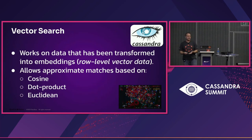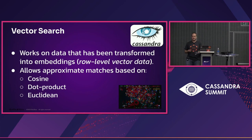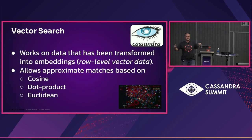Vector search is new with Cassandra as of 5.0. If you haven't used it much, it works on data that's been transformed or tokenized into embeddings. It allows you to do approximate matches or searches on that data inside vector space. You can do that with a few different algorithms — cosine-based, dot product which is a little bit faster if all your vectors are normalized properly, and Euclidean distance between vectors. One thing I found out the hard way: if you have a vector that is all zeros in vector space, Euclidean is the only one you can use, because all the cosine-based ones will throw a divide-by-zero error.